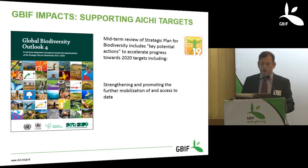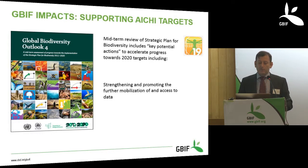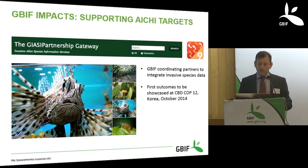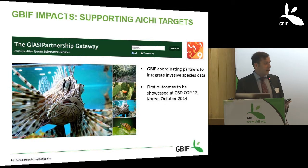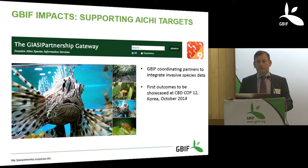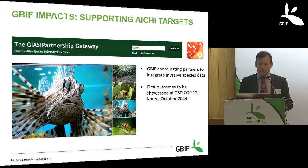Just briefly, another Aichi target that GBIF has been directly involved in is Target 9, which relates to invasive alien species. GBIF has acted as a coordinating partner within the Global Invasive Alien Species Information Partnership, which on behalf of the CBD brings together various data and information providers — including IUCN and CABI — to make scattered information relating to invasive species available in a more integrated way that is more useful to policy makers. The first technical outcomes of that collaboration will also be unveiled next month.